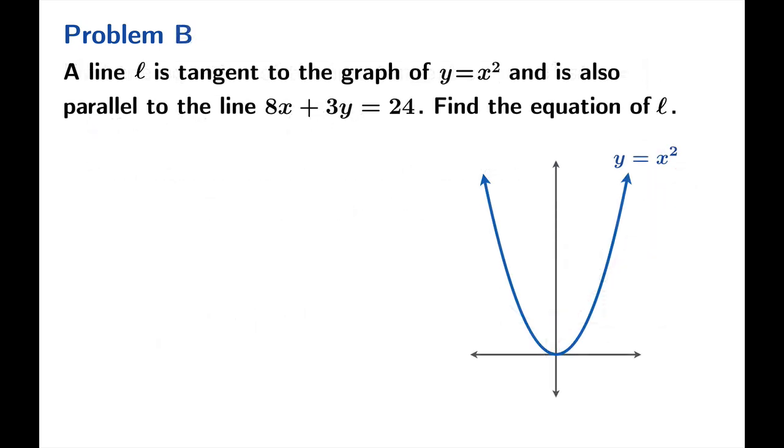Here's an interesting problem. A line L is tangent to the graph of y equals x squared and is also parallel to the line 8x plus 3y equals 24. Our job is to find the equation of L. So first let's think about the line 8x plus 3y equals 24. We know by setting y equal to 0 and solving for x, and then x equal to 0 and solving for y, the intercepts are 3 and 8. So this line goes through these two points and looks something like this.